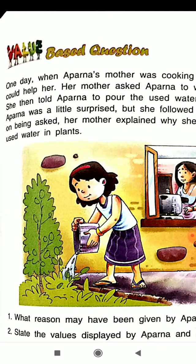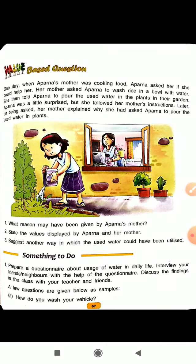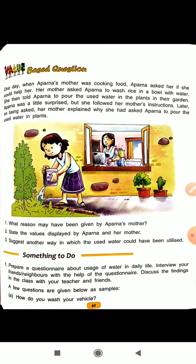One day when Aparna's mother was cooking food, page number 67. Aparna asked her if she could help her. Her mother asked Aparna to wash rice in a bowl with water. She then told Aparna to pour the used water on the plants in the garden. Aparna was a little surprised but she followed her mother's instruction. Later on being asked, her mother explained why she had asked Aparna to pour the used water on the plants.